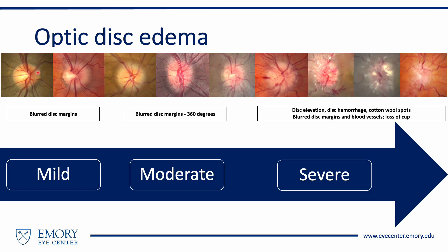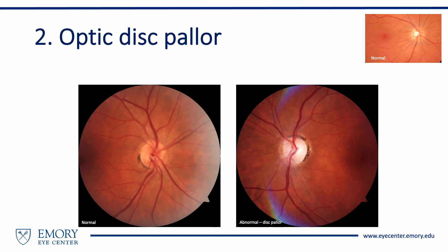Observe the various grades of optic disc edema from the very mild to the very severe. The pale optic nerve: compared to the right optic nerve, the left optic nerve appears pale. Optic nerve pallor indicates underlying damage, such as from ischemia, inflammation, compression, infiltration, or other causes.